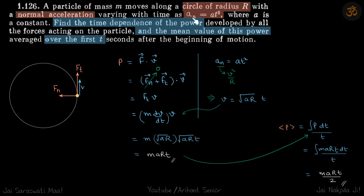a_n is v^2/r. From there we get a relation between v and t. That is v equals root(a*r*t). We put that here and we get the power as m*a*r*t.